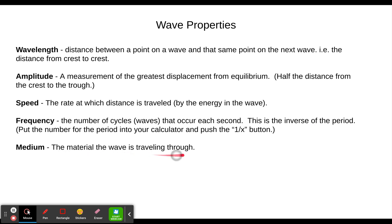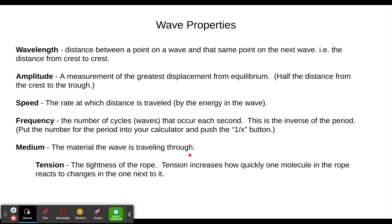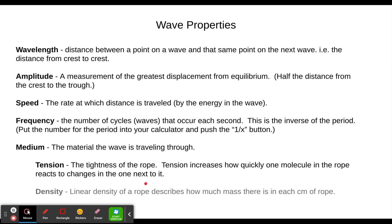Medium is the material the wave is traveling through. So if this is a sound wave traveling through the air, the medium is the air. For these problems, the waves are going to be traveling through a rope, so the medium will be the rope. Tension is the tightness of that rope — how tight it is. The tighter you make it, that's going to increase how quickly one molecule in the rope reacts to changes in the one next to it, meaning the wave will end up going faster through it.